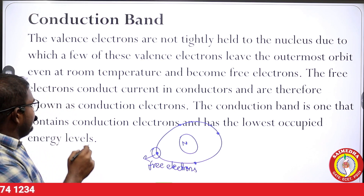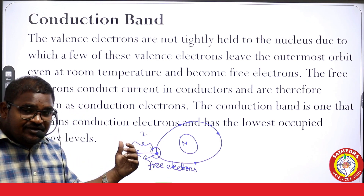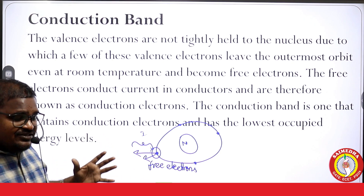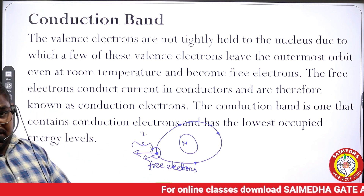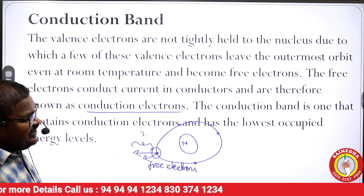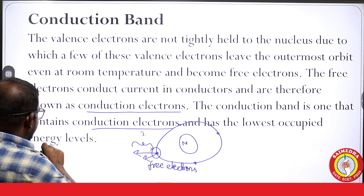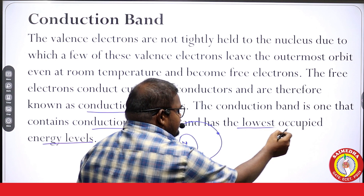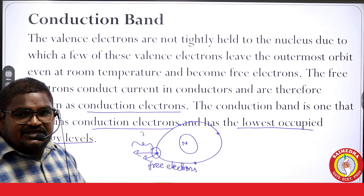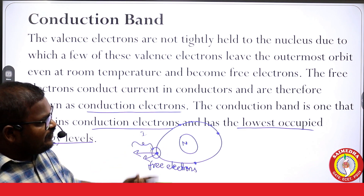The flow of free electrons gives the conduction, and therefore these are called conduction electrons. The conduction band is the one that contains these conduction electrons and has the lowest occupied energy levels. So the valency band has the highest occupied energy levels, while the conduction band has the lowest occupied energy levels.